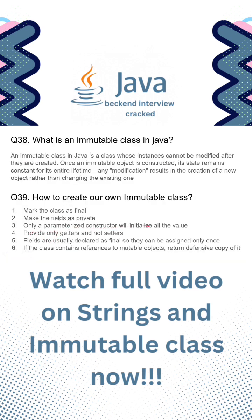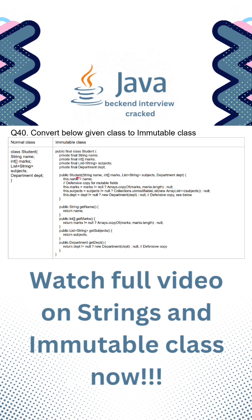Third, only a parameterized constructor will initialize all the values. Here we have a parameterized constructor taking parameters: name, an integer array of marks, a list of strings for subjects, and a department object. For name we use the 'this' keyword to initialize the value, but for the integer array of marks we create a defensive copy — if marks is not null we copy it, otherwise we keep it as null. The same applies for subjects, and for department we use a copy constructor to create a new object from the current object.